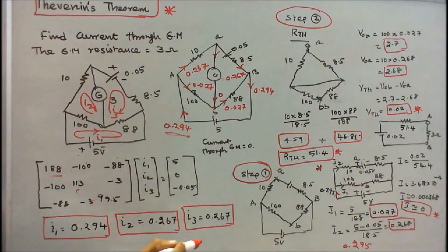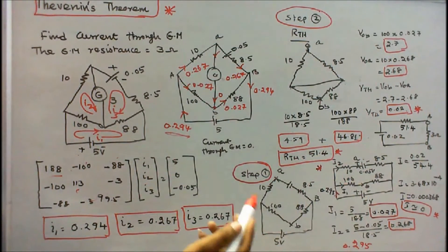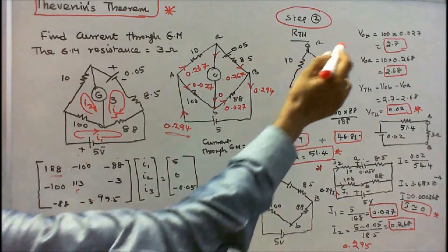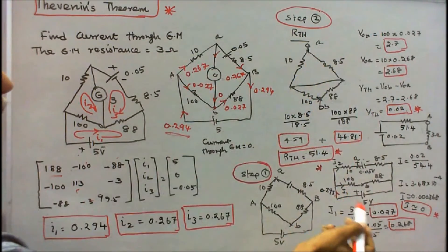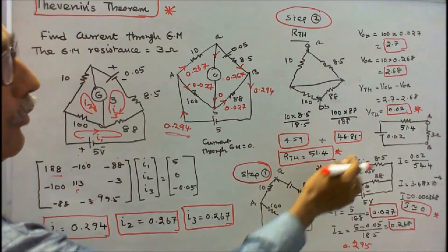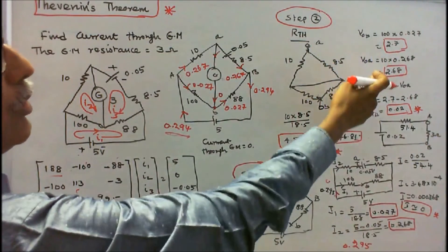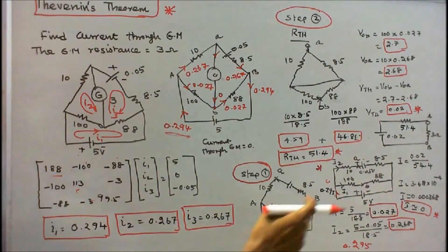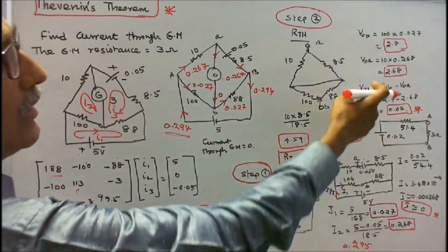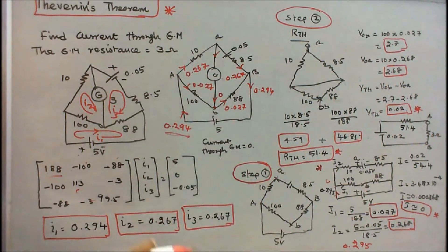Now I find the Thevenin's voltage. Knowing the branch currents, I can find VOB — the voltage across the 100 ohm resistance — as 100 times 0.027, equal to 2.7 volts. VOA — the voltage across the 10 ohm resistance — is 10 times 0.268, equal to 2.68 volts. Therefore, Thevenin's voltage equals VOB minus VOA, which is 2.7 minus 2.68, equal to 0.02 volts.